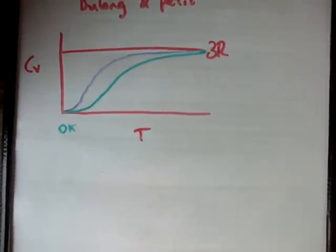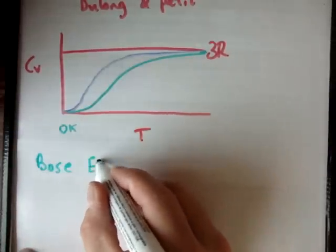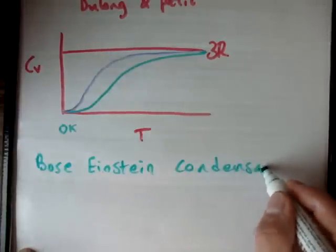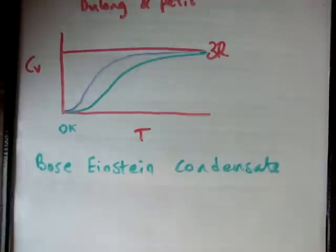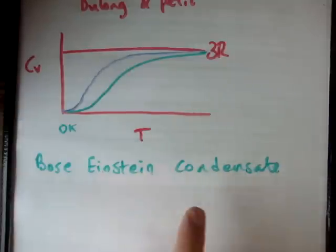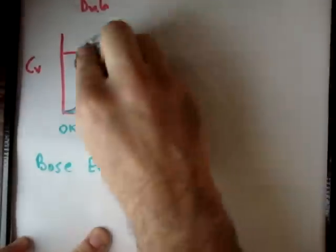What Einstein was able to predict was a Bose-Einstein condensate — it wasn't just him, there was also an Indian scientist called Bose. He basically said that in and around zero Kelvin, matter behaves completely differently than it does at normal temperatures, and you get these things called Bose-Einstein condensates. Einstein predicted that if you got low enough, your specific heat capacity would go to zero, and you'd have a new phase of matter.